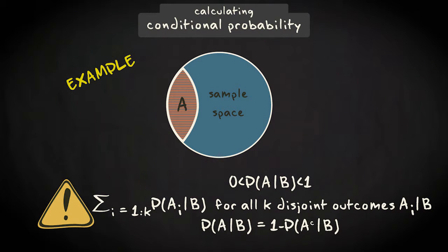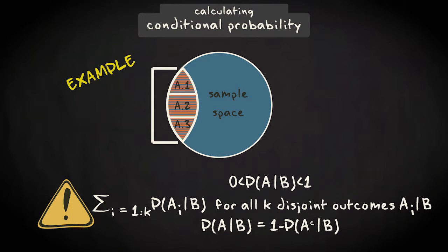For example, if A in the reduced sample space — that is, A given B — could take three values, the union of these three probabilities should be one.